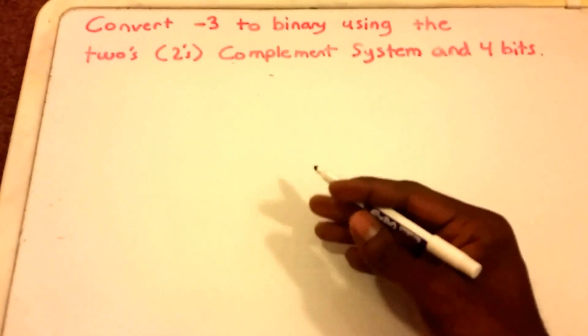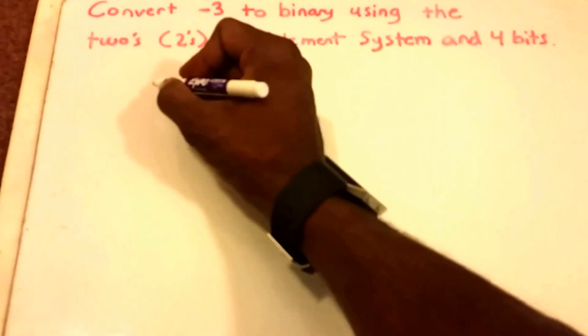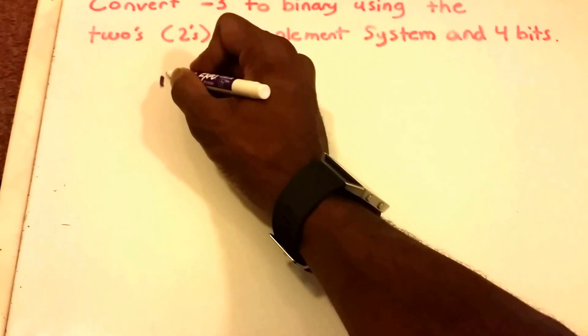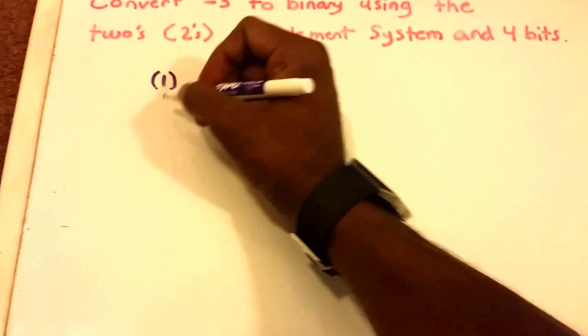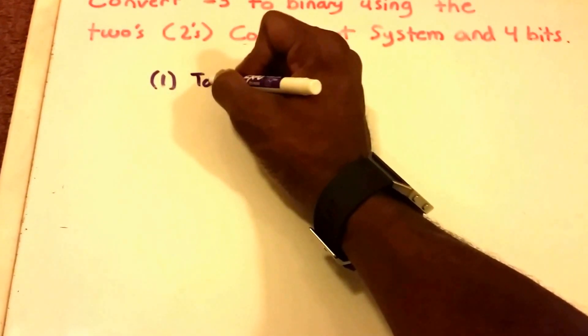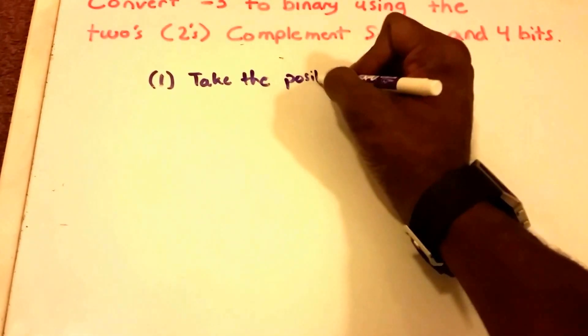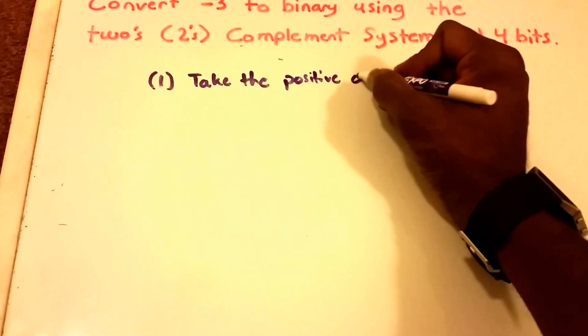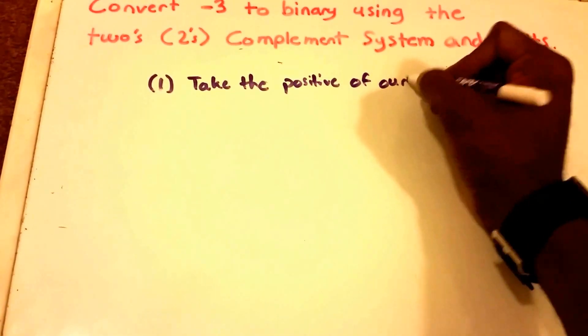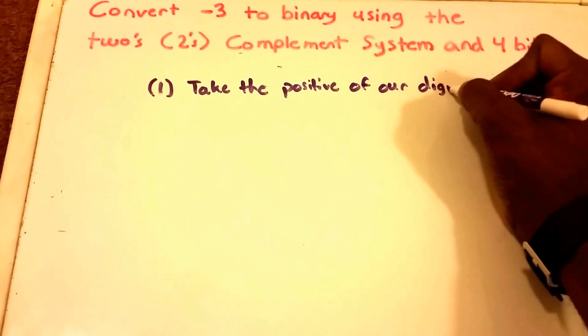In order to do this, there's a few things that we have to do. First, I'll write them down here, the step-by-step. The first thing we need to do is take the positive of our number and convert it to binary.